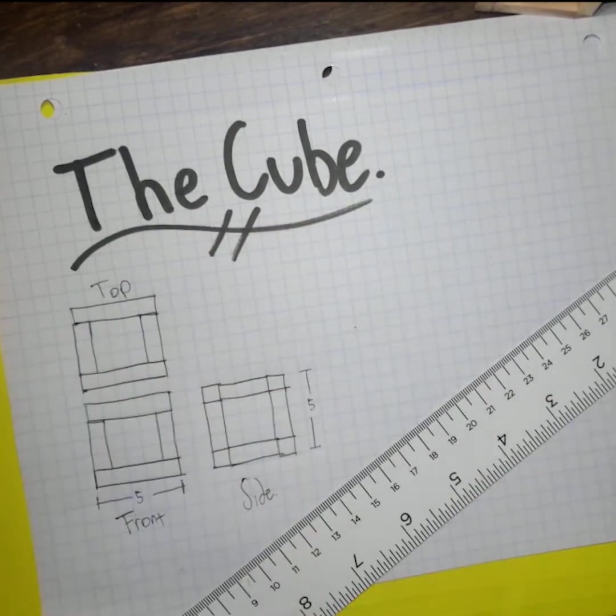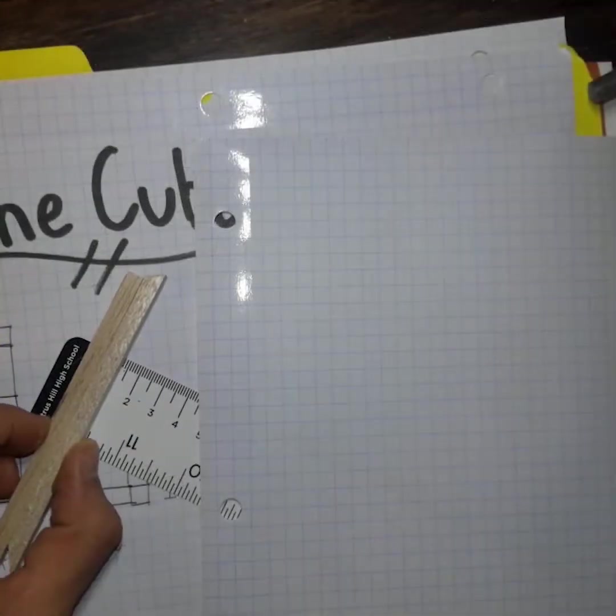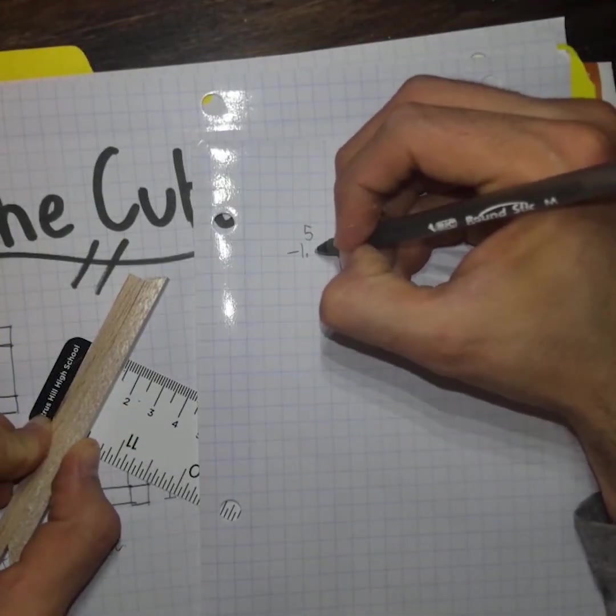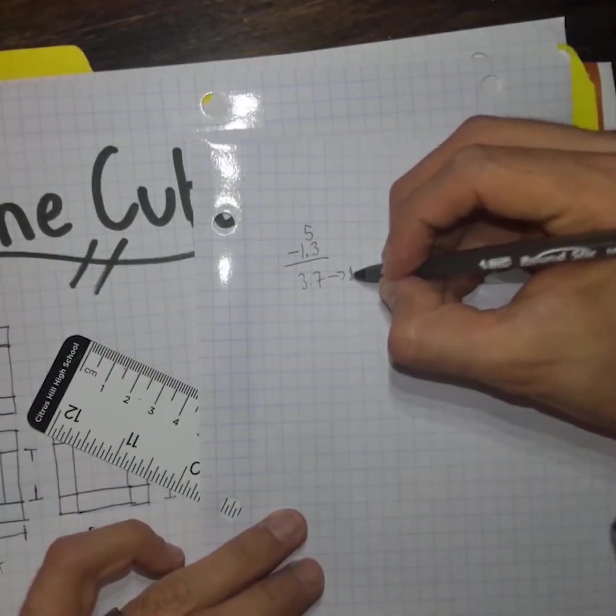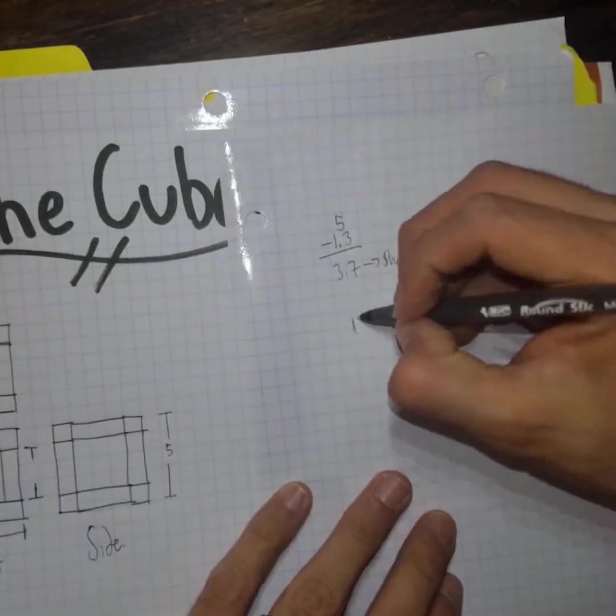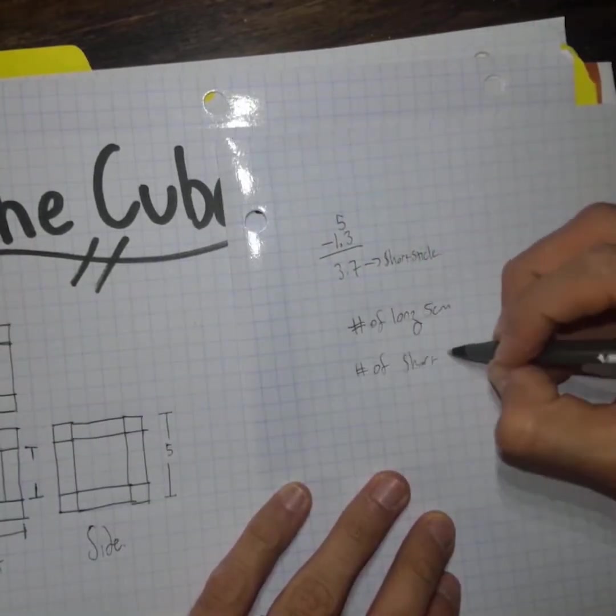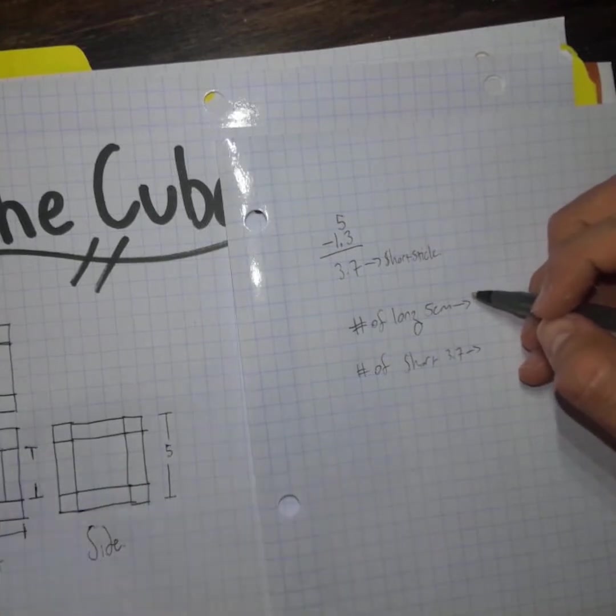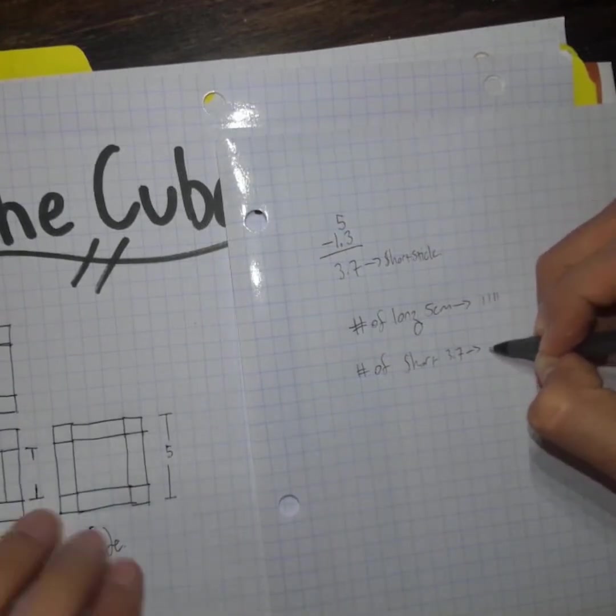To make sure that I had a cube, I needed to make sure that my vertical and horizontal pieces were cut correctly, and I needed two different dimensions. I needed four pieces that were long and were 5 centimeters long, and then I needed eight pieces that were short at 3.7 centimeters.